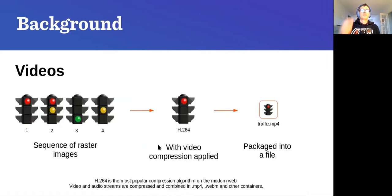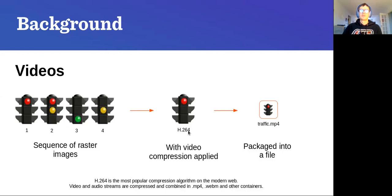Videos are basically sequences of raster images arranged according to the frame rate and timing settings of the file, with a compression algorithm applied. Compression is critical — YouTube wouldn't exist without successful compression algorithms. Initially, internet bandwidth and processing power were relatively low, so you needed to compress videos to transfer them to a server, distribute them to clients, and ensure computers could decode them frame by frame for smooth playback. Nowadays the most popular compression algorithm on the internet is H.264.